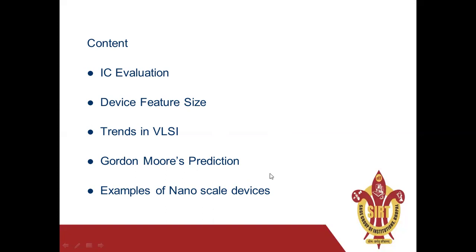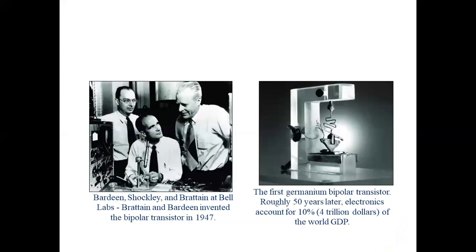Next is Gordon Moore's prediction. In this topic we see Gordon Moore's prediction regarding the semiconductor industry and how it can grow in the future. Last, we have a few images of nanoscale devices. So let's start our topic. This is the very first picture of Bell Labs, where three scientists invented the first bipolar junction transistor.